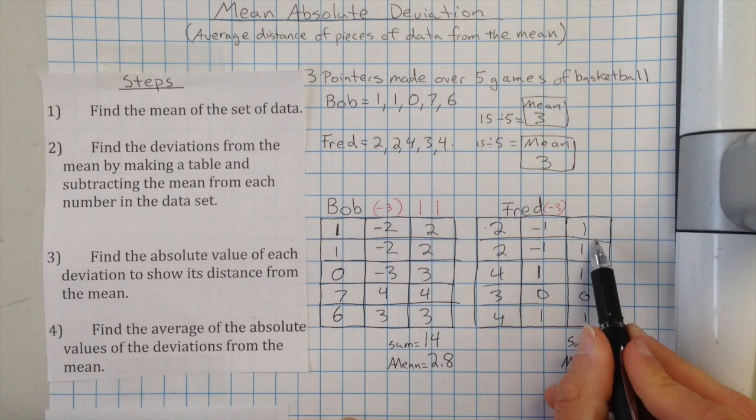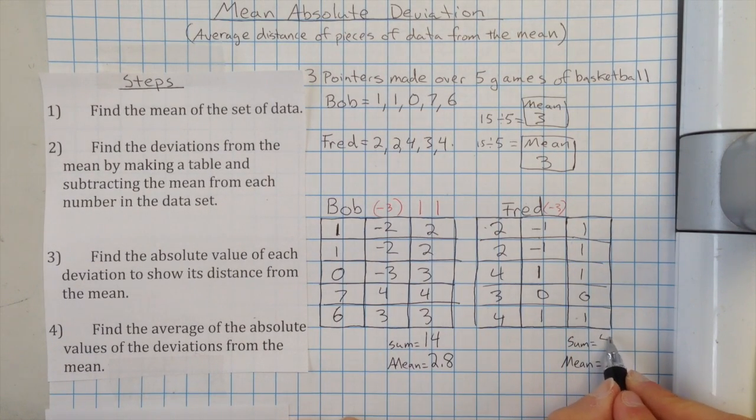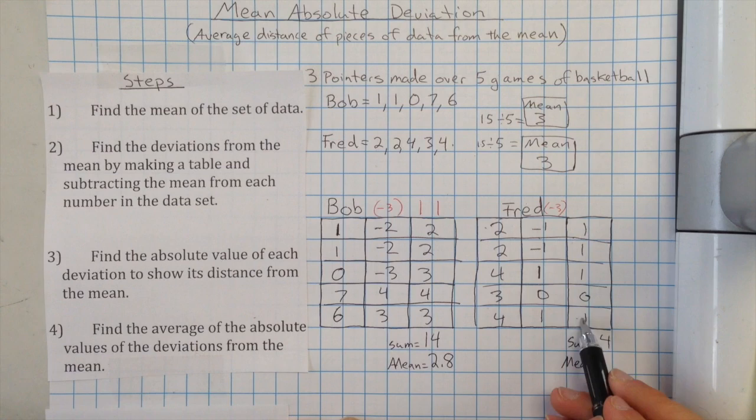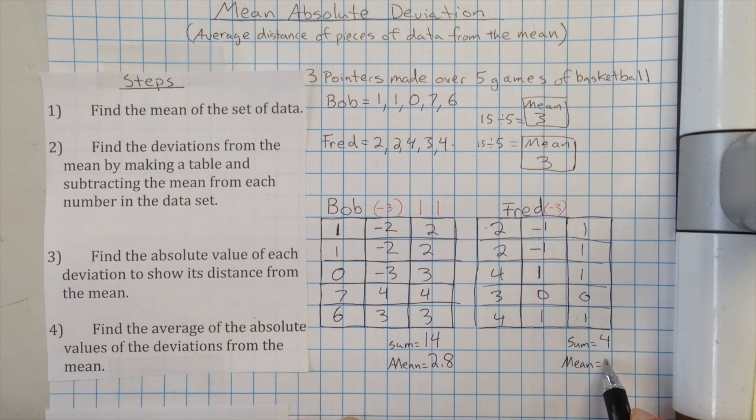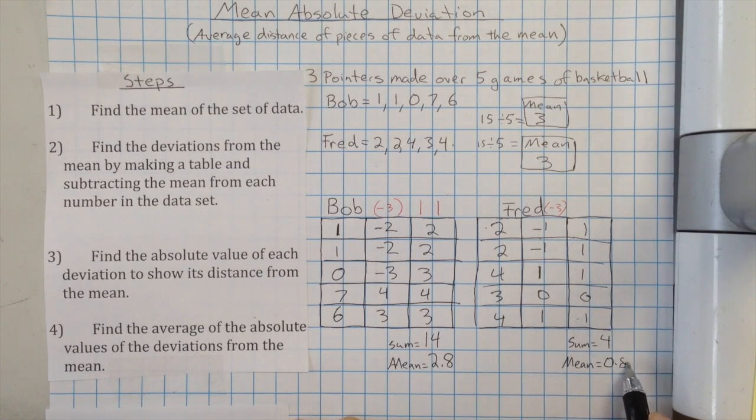And then over here, we're going to do the same thing. We're going to add these numbers together. So there are four if we sum it. And to find the average, we would divide those by five. And that would give us zero point eight.